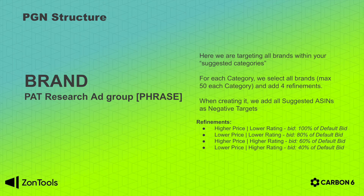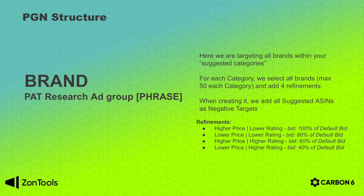Then we will bid on lower price, lower rating brands, which have a less likely conversion, so we're going to use 80% of your default bid. Another segment is by higher price, higher rating — more expensive products with higher ratings are perceived as higher value, so you're even less likely to convert, and we'll use 60% of the default bid. The last segment is lower price, higher rating — in this one you have a very small chance of conversion because you are selling something more expensive with a lower star rating. Because of this risk, we're just going to use 40% of your default bid.